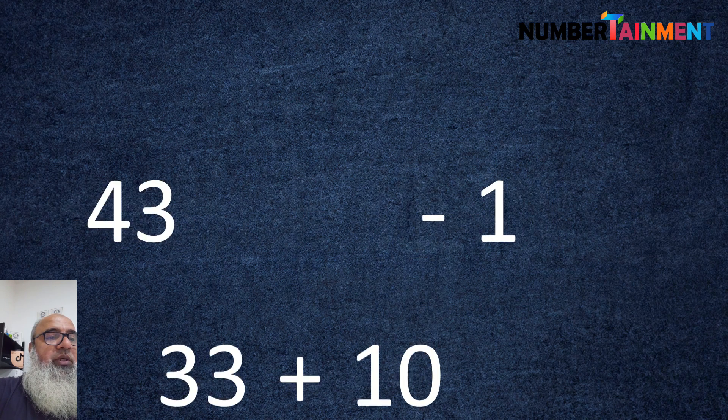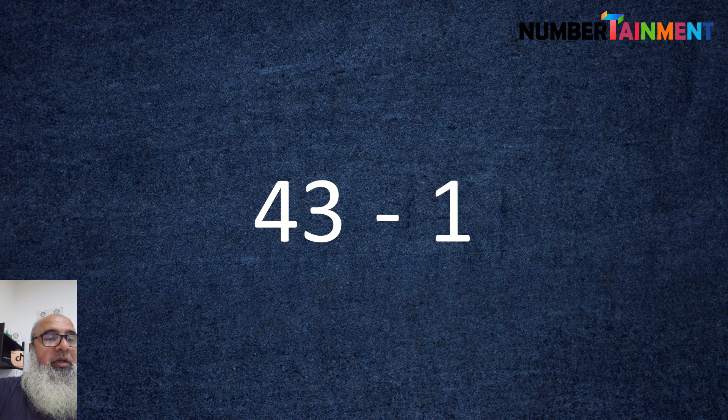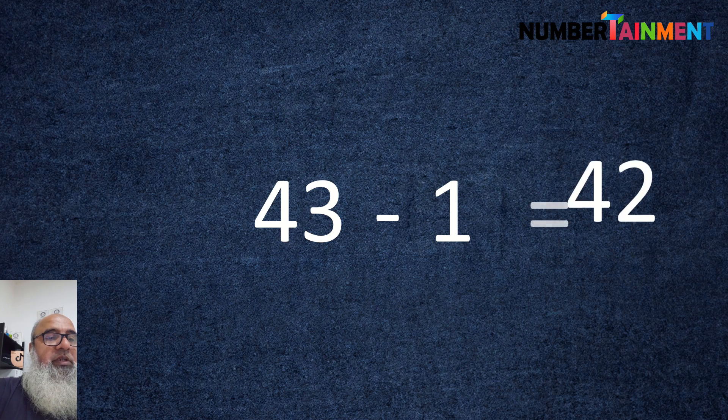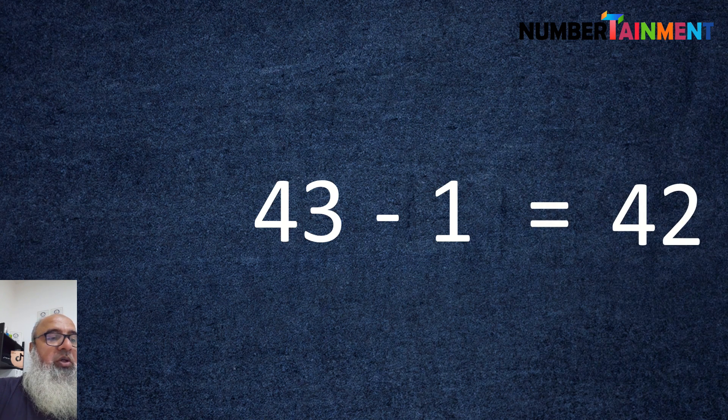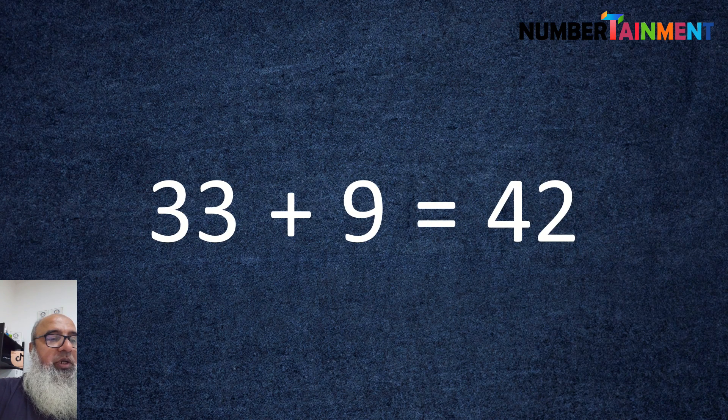Adding 10 to 33 gives 43 and taking 1 away leaves 42. So 33 plus 9 is equal to 42.